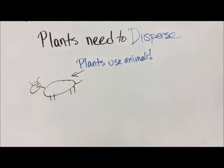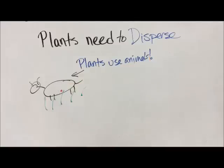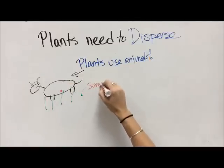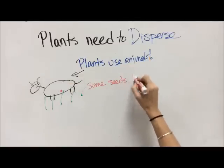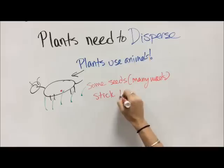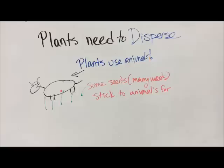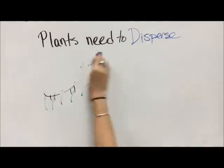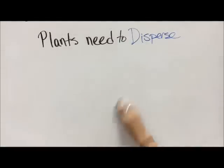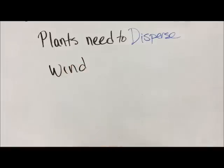Another thing that plants will do: let's say you take your dog out for a walk and it gets something stuck on it, like a burr or a cattail. Some seeds, like seeds in weeds, will stick to an animal's fur, or in our case stick to our socks. Then we walk away and shake it off, and that plant is able to grow somewhere new.